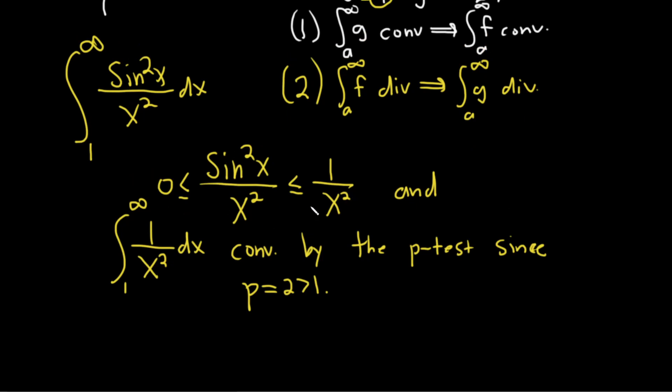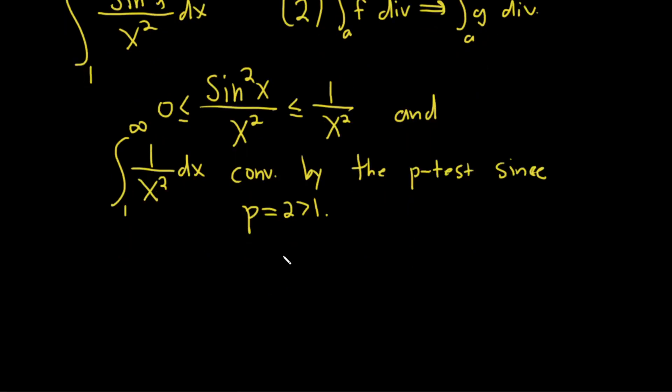So we have that f is less than or equal to g. So in other words, our integrand is less than or equal to, it's smaller than the integrand of a convergent integral. But again, the integrand of our improper integral is smaller than the integrand of a convergent integral. Therefore,